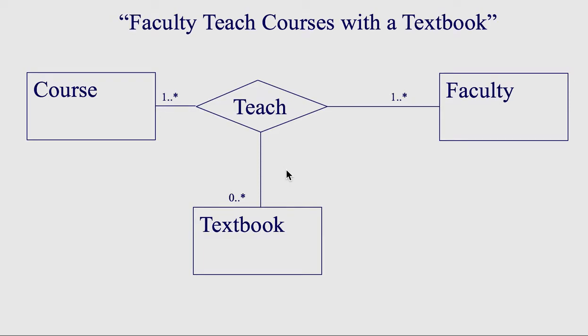Let's go through this one. So let's say we have course and faculty. You want to start with one instance of two of them to get the third. So we're going to start with course and faculty to get the multiplicity values for textbooks.